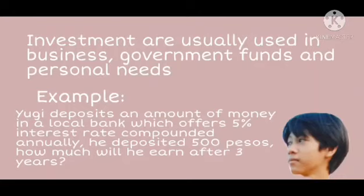Example: Yugi deposits an amount of money in a local bank which offers 5% interest rate compounded annually. He deposited 500 pesos. How much will he earn after 3 years?